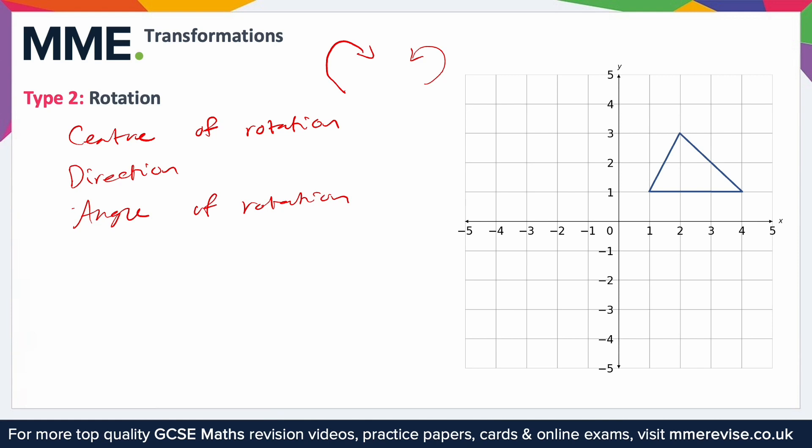So say, for example, we have this triangle here and we wanted to rotate this by 90 degrees anti-clockwise. So ticking off what we need, we've got an angle of rotation, anti-clockwise, so we've got a direction of rotation. And then it says around the point 1,1. So we've got a center of rotation. We've got all of the conditions that we need.